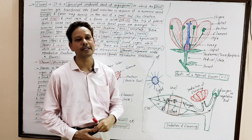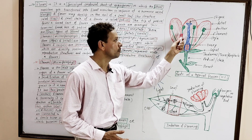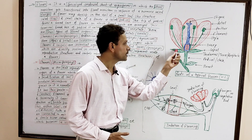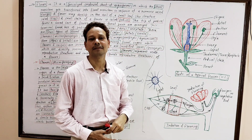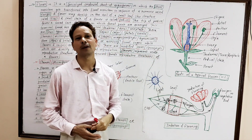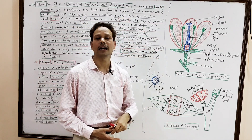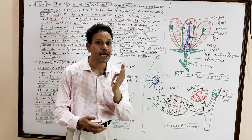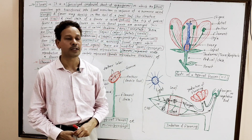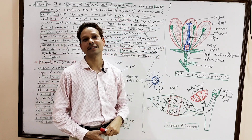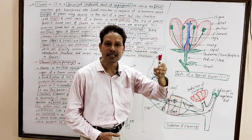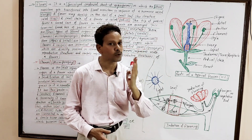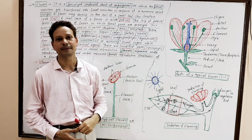In a flower, four different organs are present: sepals, petals, stamens, and carpels. Out of these four organs, sepals and petals are non-essential organs, because they are not directly involved in sexual reproduction in angiosperms. While stamens and carpels are essential organs, which are directly involved in sexual reproduction in angiosperms.